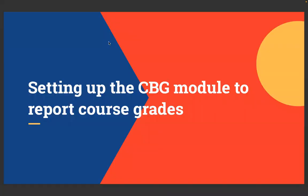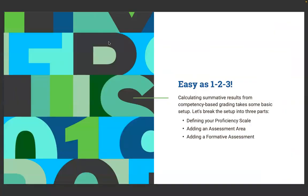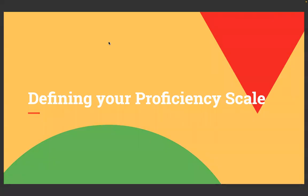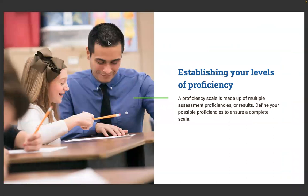Now let's look at setting up the CBG module to report course grades. Calculating summative results from competency-based grading takes some basic setup. Let's break that setup into three parts: defining your proficiency scale, adding an assessment area, and adding a formative assessment — or multiple formative assessments.